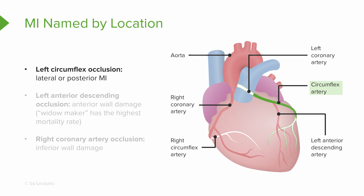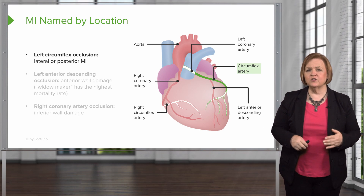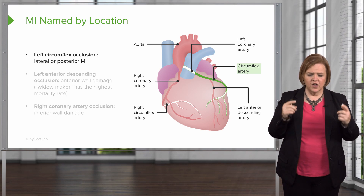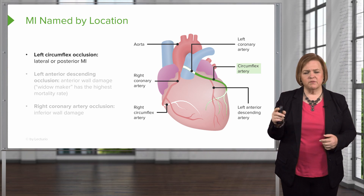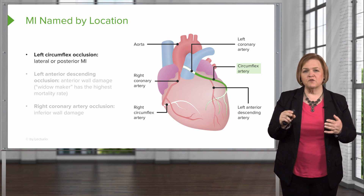Locate the left coronary artery on the graphic. Underneath it, we have the circumflex artery, which travels between the vessels near the top. The left circumflex wraps around the heart — and if we have a blockage there, it will be a lateral or posterior MI. The drawing shows this with a dotted line as the vessel comes around the backside of the heart, giving you a 3D picture of how these vessels wrap around the cardiac muscle. Make sure you can name these vessels from memory.